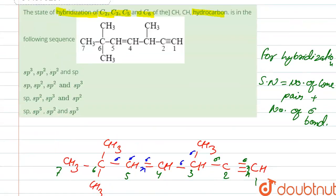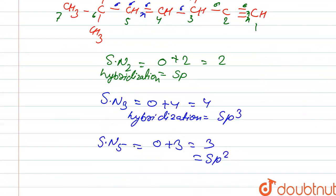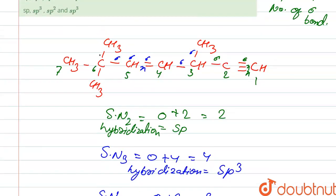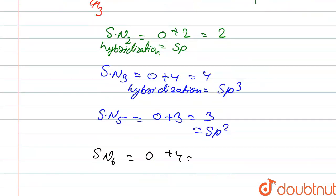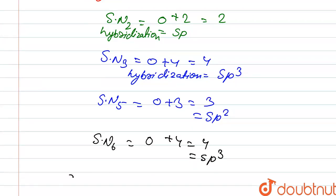Next we have to find out carbon six. Steric number for carbon six: let's see here at carbon six — total four sigma bonds. So it is sp3 hybridization. So the sequence is: sp, sp3, sp2, and sp3.